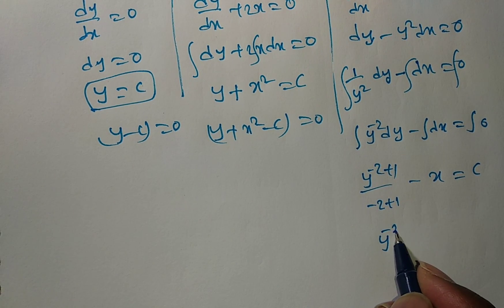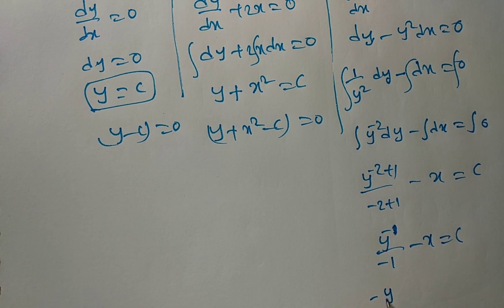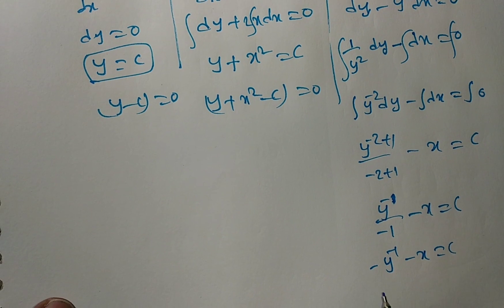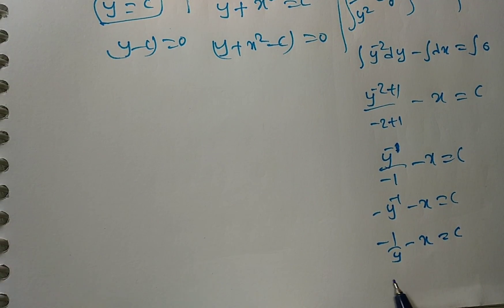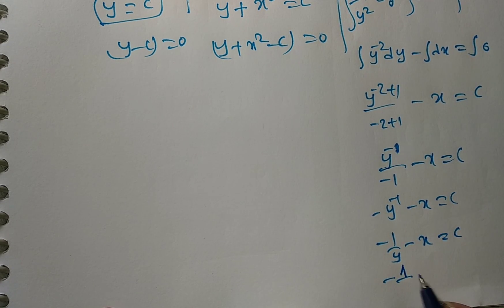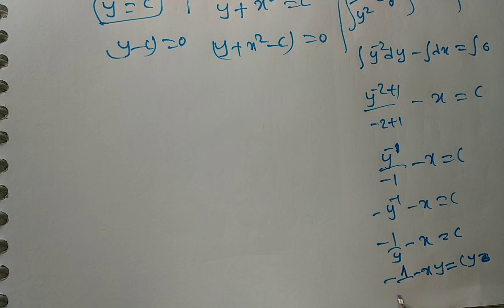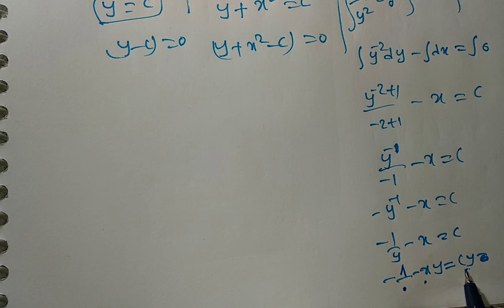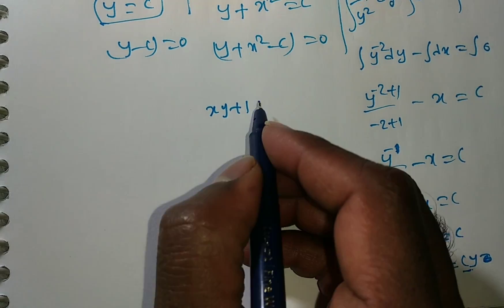This gives minus 1/y minus x equals c. Multiplying through: minus 1 minus xy equals cy. Rearranging: xy plus 1 minus cy equals zero. This is the third solution.